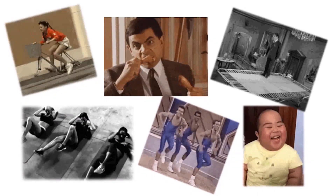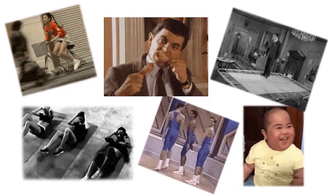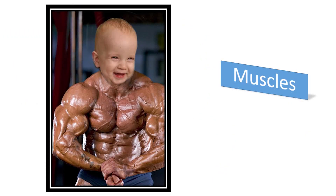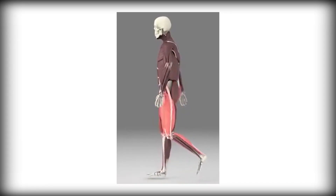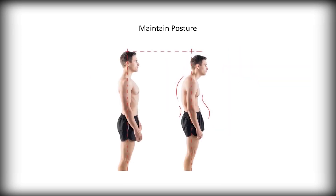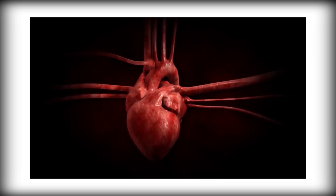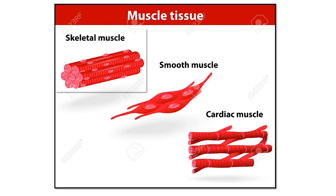Human beings are involved in a variety of activities every minute. All these activities and movements are the result of coordinated action of a number of muscles in our body. The contraction and elongation of muscles results in movement. Muscles are responsible for movement, maintaining and changing posture, movement of internal organs like contraction of the heart, and movement of food through the digestive system. The human body is made up of different types of muscles.